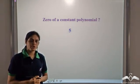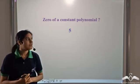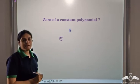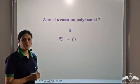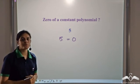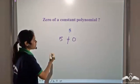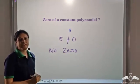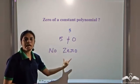What is the zero of a constant polynomial, such as 5? The zero is defined as the value of the variable at which the polynomial becomes 0. We would need 5 = 0, which is never possible. So a constant polynomial has no zero — there is no value of the variable at which it becomes 0.